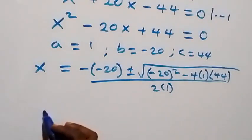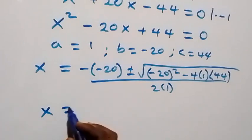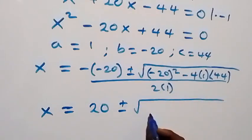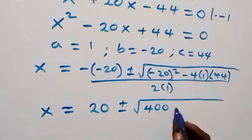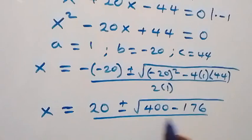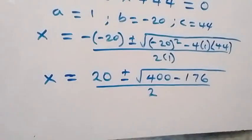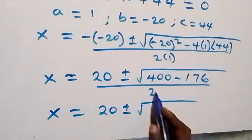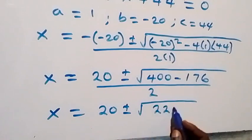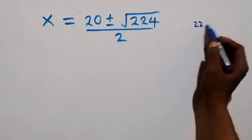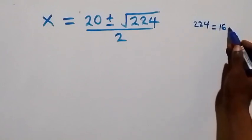This becomes x equals to 20 plus or minus square root of 400 minus 176, all over 2. That gives us x equals to 20 plus or minus square root of 224, divided by 2. We can rewrite 224 as 16 times 14.